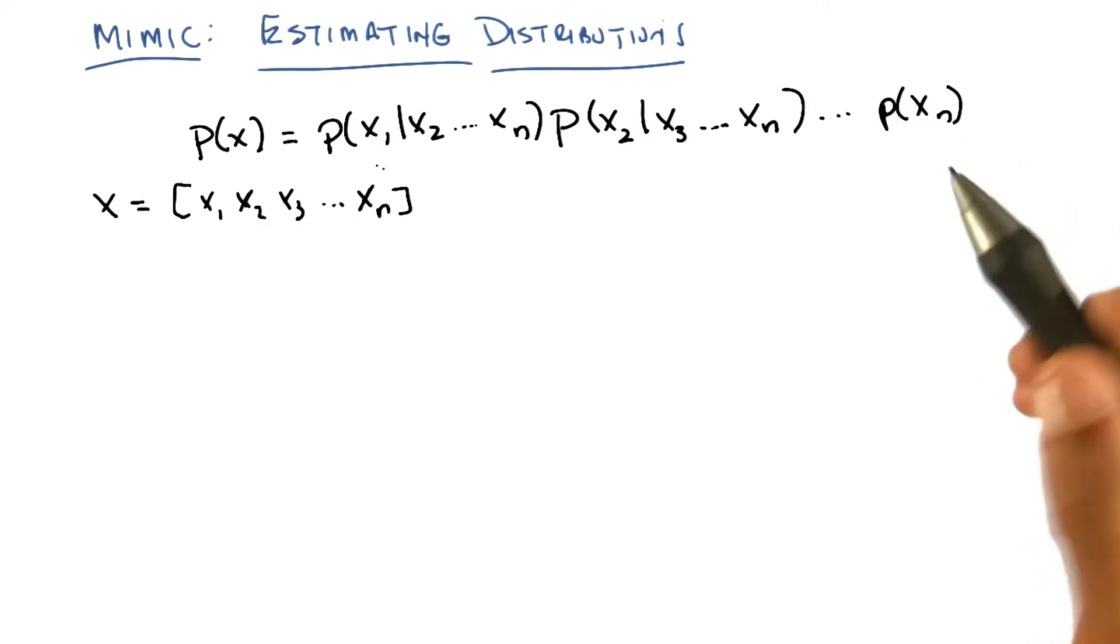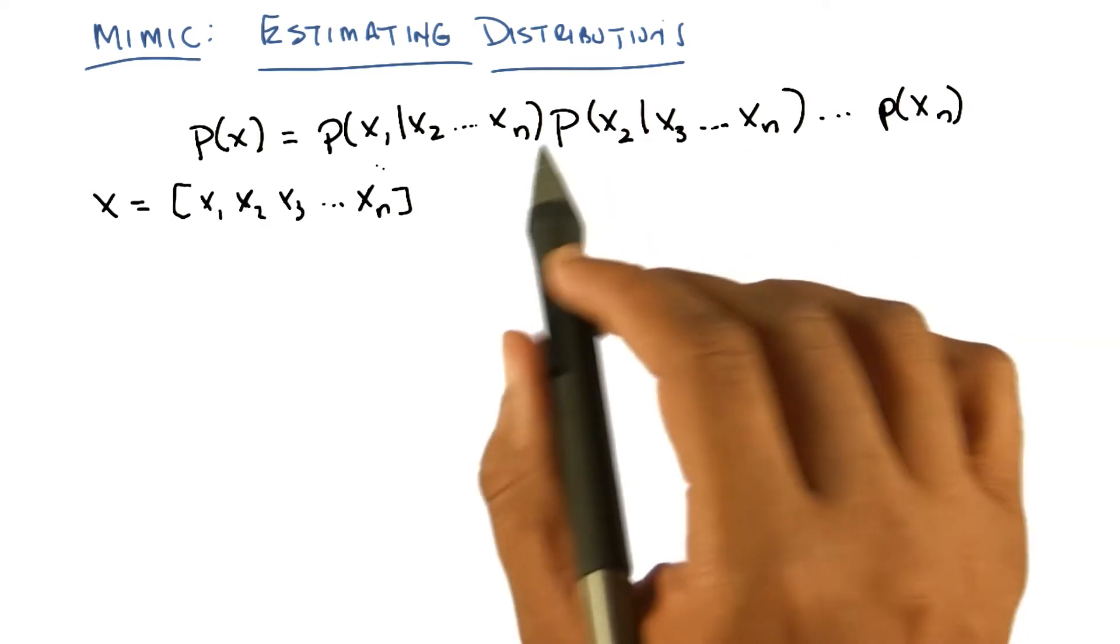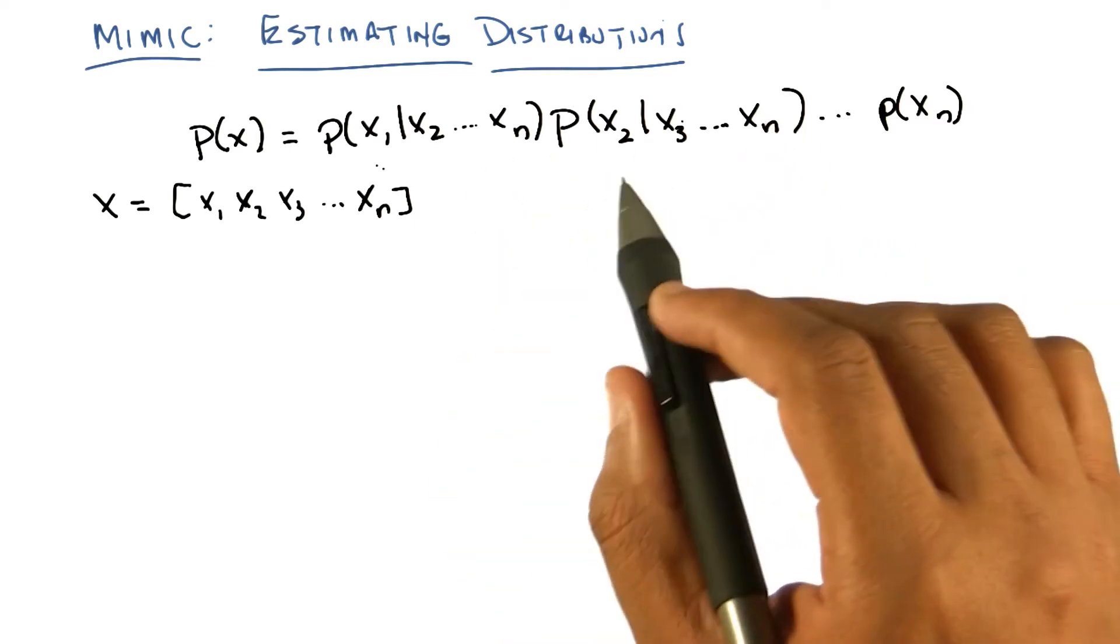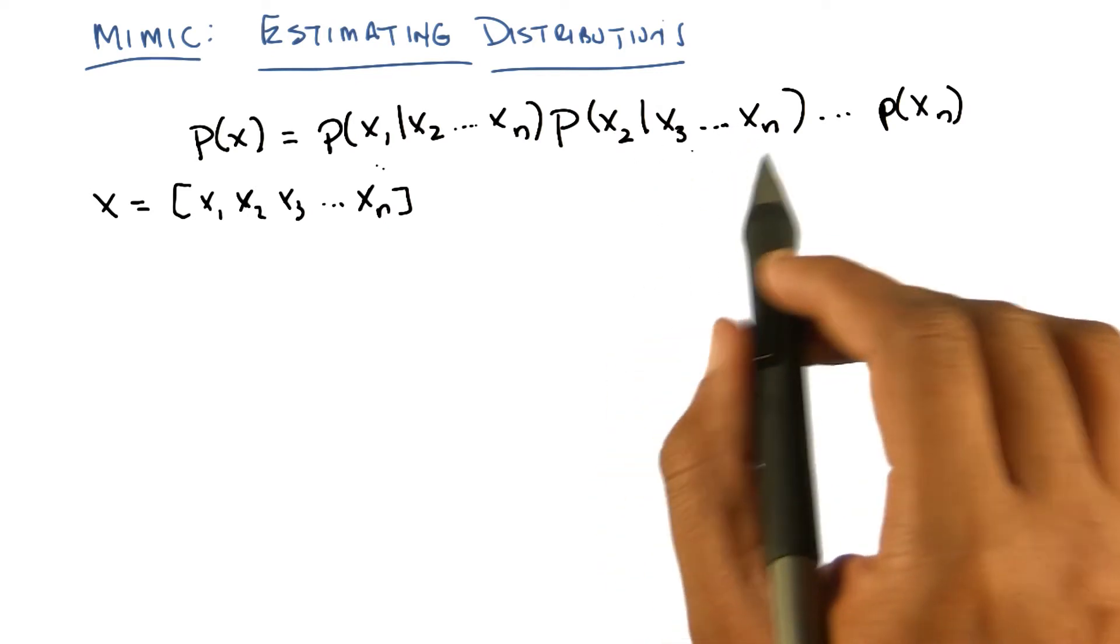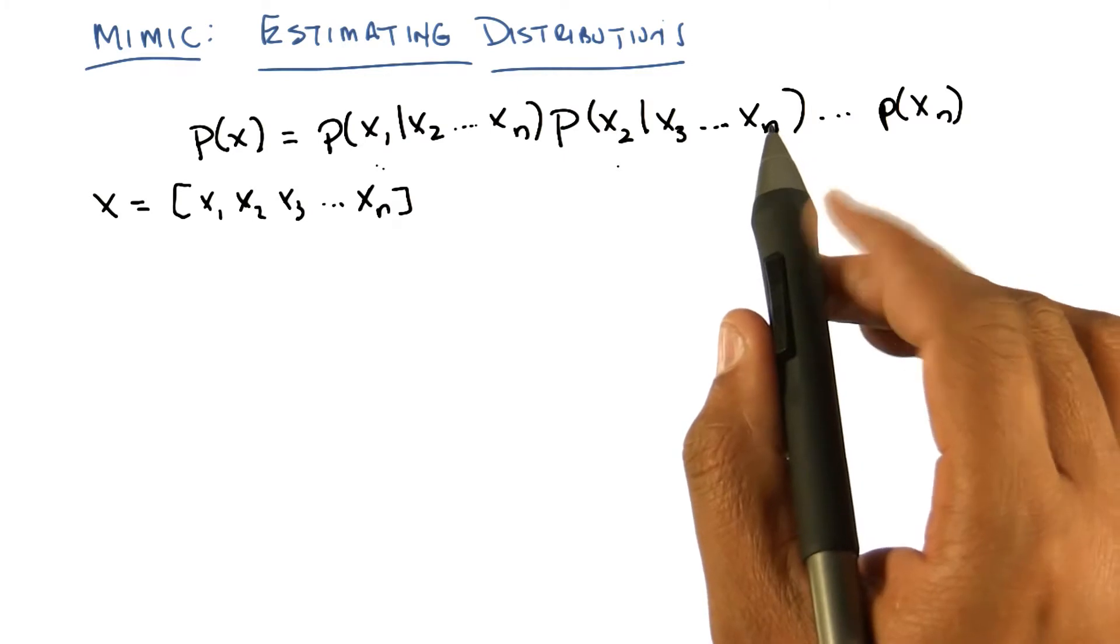Well, the first distribution is conditioned on a lot of things. So it's an exponential size conditional probability table. Exactly. So this is exponential table, and if it's exponential table, then we need to have an enormous amount of data in order to estimate it well. And this is sort of the fundamental problem.